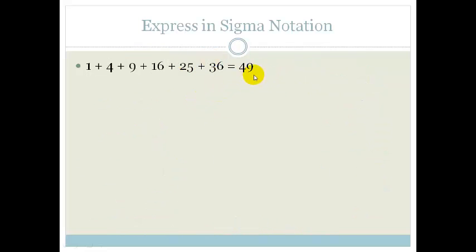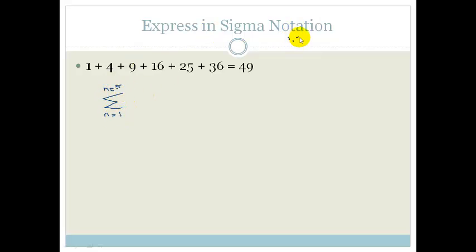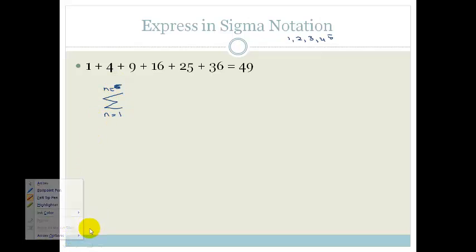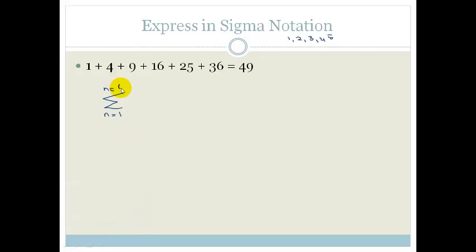Now it says: express in sigma notation. So we write our sigma symbol from n equals 1 to — let's count how many terms we have: 1, 2, 3, 4, 5, 6 — the 6th term. We know the series goes to 49. So all we now need to do is find our general term.